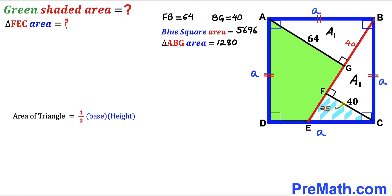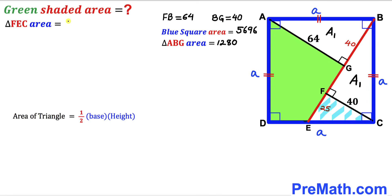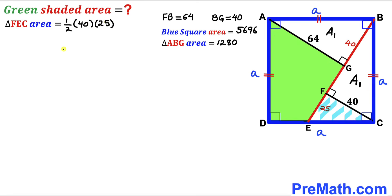Now we calculate the area of right triangle FEC using the same formula: area = ½ × base × height. The base is 40 and the height is 25, so the area of triangle FEC = ½ × 40 × 25 = 500 square units.